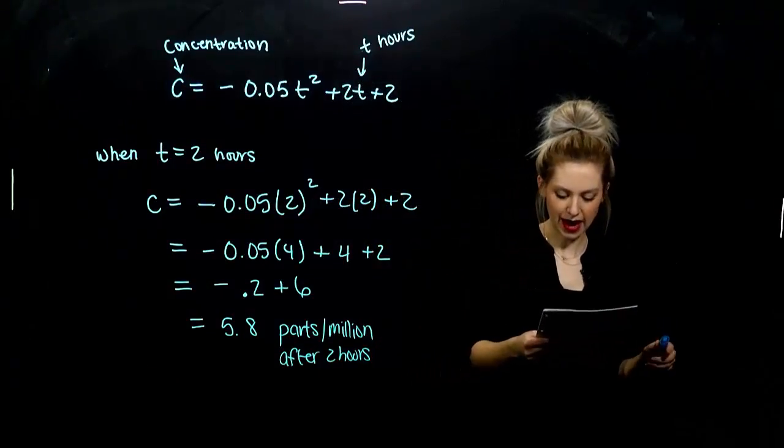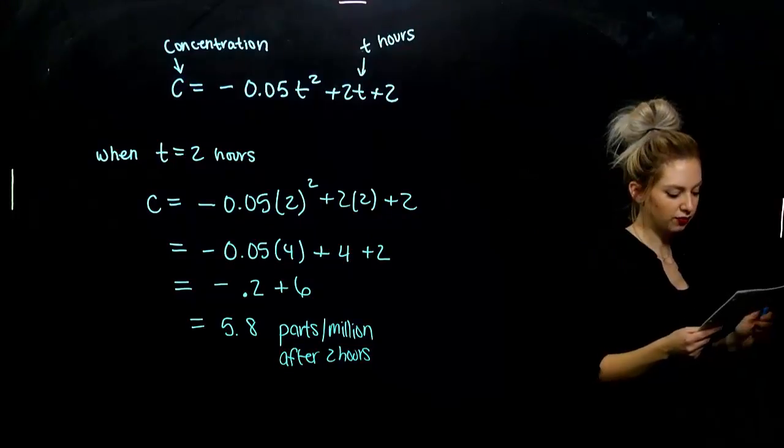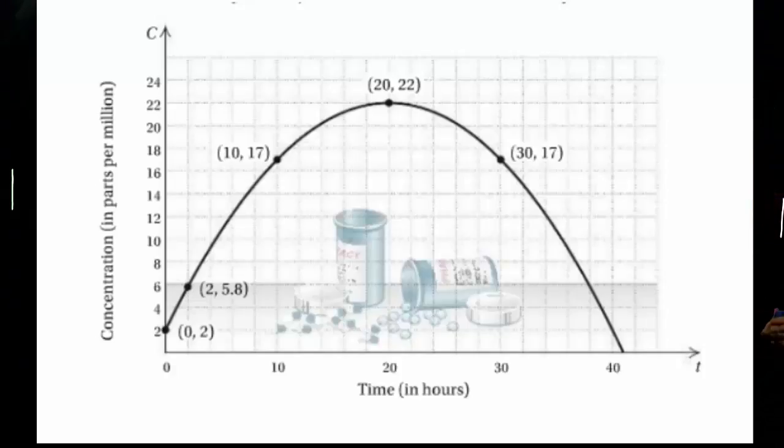So now if we take a peek at the graph. If we evaluate the polynomial for several values of T, the graph of the polynomial can be seen below. It's curvy. And why is it only in the first quadrant? Why is our graph only in the first quadrant? Does it ever make sense to have negative time or negative concentration of something? No.